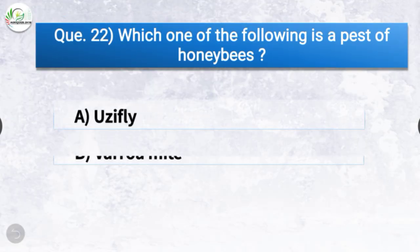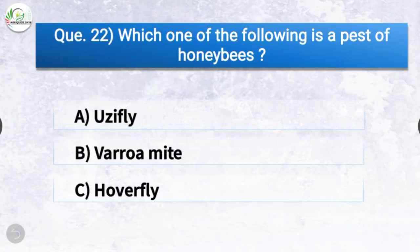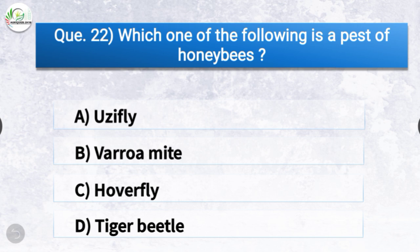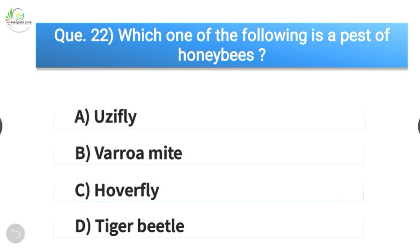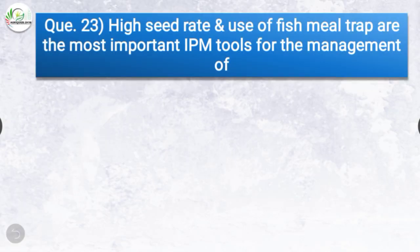Question number twenty-two: Which one of the following is a pest of honeybee? The options are hoverfly, varroa mite, hoverfly, or tiger beetle. The correct answer is option B, varroa mite — varroa mite is a pest of honeybee.